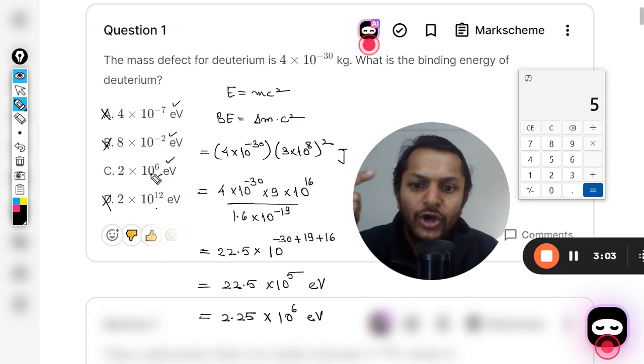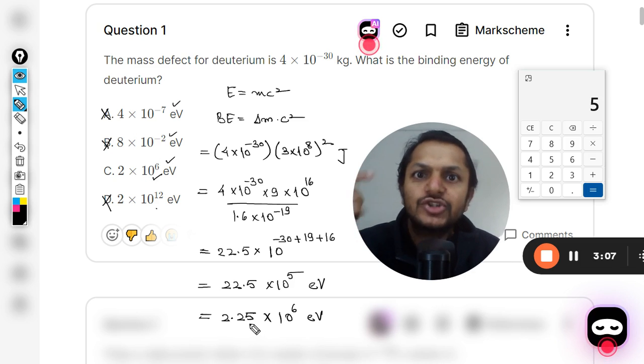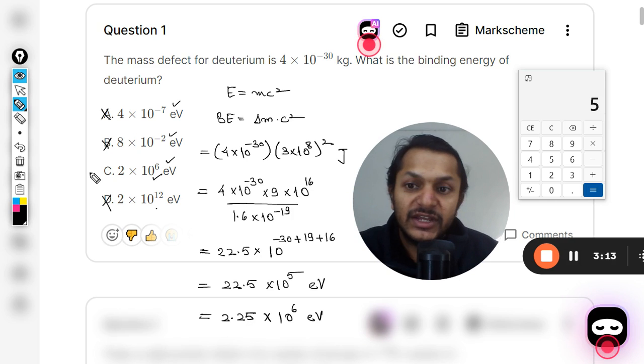So this can be written as 2.25 × 10^6 eV. This is how we can write it, so it comes comparable to the C option. So 2.25 has been approximated as 2.